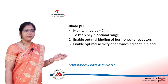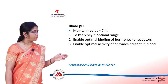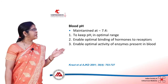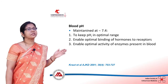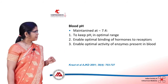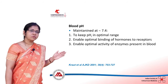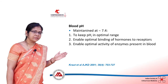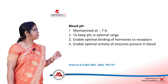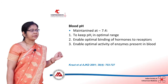pH is maintained with the help of plasma membrane hydrogen and base transporters, which are activated in response to acidemia. The blood pH is maintained at 7.4, which is required to keep intracellular pH in the optimum range. It enables optimal binding of hormones to receptors and also enables optimal activity of intracellular enzymes.